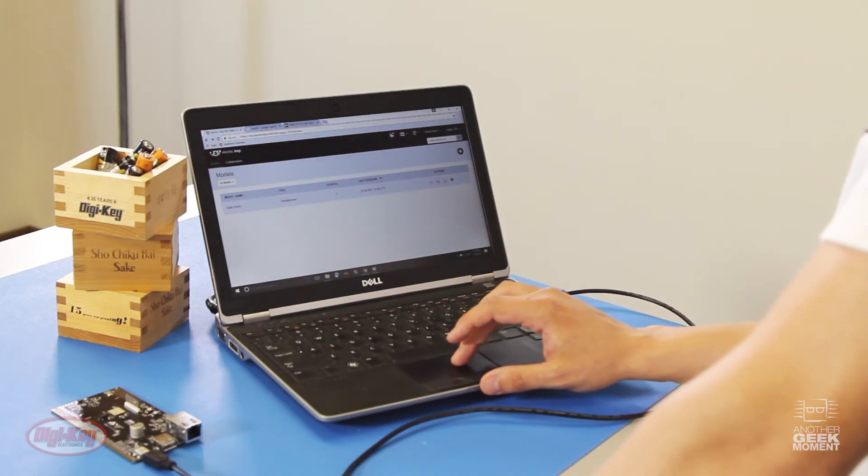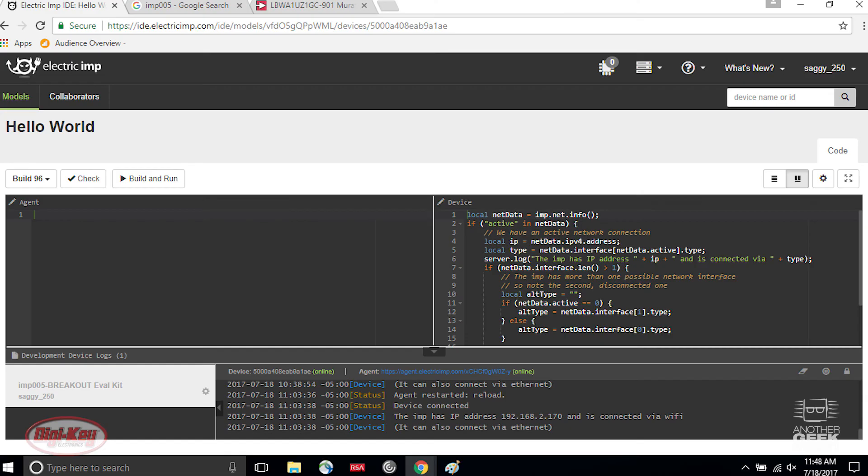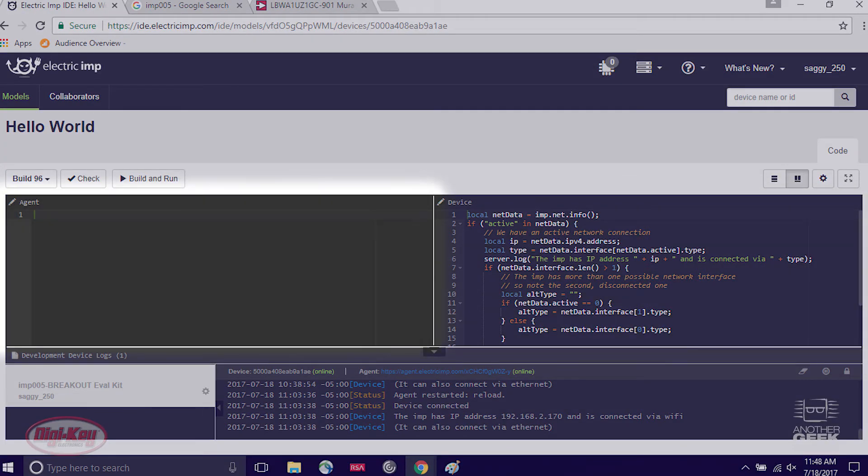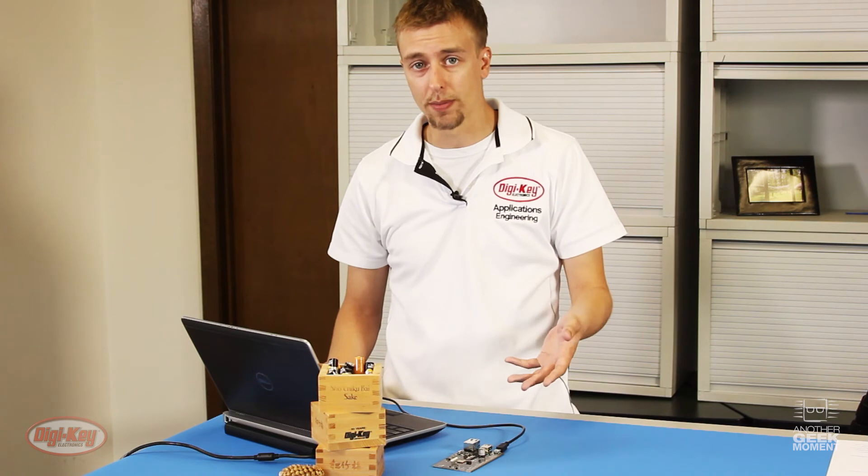I can go over to their actions button and they have a button for code. I can go to see my actual IDE environment. There's a device pane and an agent pane. The device pane is going to be responsible for the actual imp module and the agent pane is going to be code written for their server for the imp cloud to respond to this.